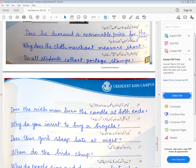Number five: Why do you insist to buy a bicycle?